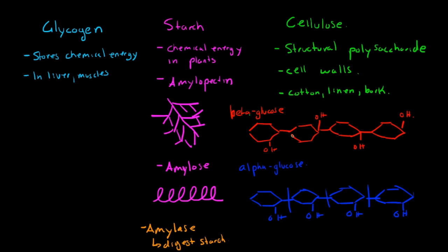Cellulose we can't digest. So things like grass and bark we can't eat. But how come a cow can eat and digest grass? Well, the cow actually doesn't digest the grass itself — it has little bacteria inside its stomach and intestines that will digest the grass for it, breaking down these beta glucose molecules and giving the cow the ability to use those individual glucose molecules for energy.